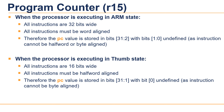We have to pay special attention to the program counter. In ARM, all instructions are 32 bits wide and all instructions must be word aligned. Therefore, the PC value is stored in bits 31 to 2, with bits 1 and 0 undefined, as instructions cannot be half-word or byte aligned.